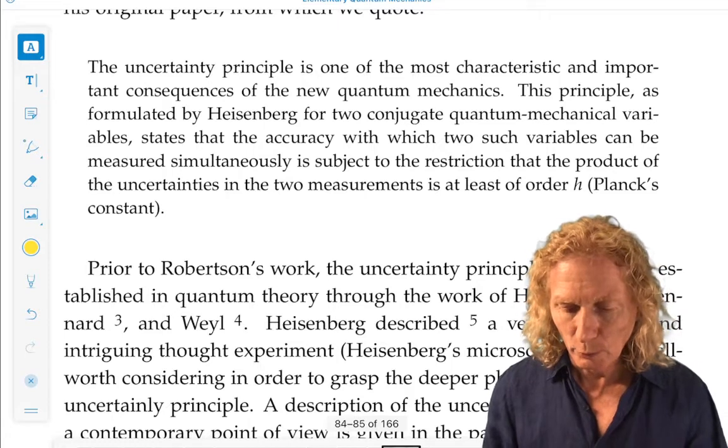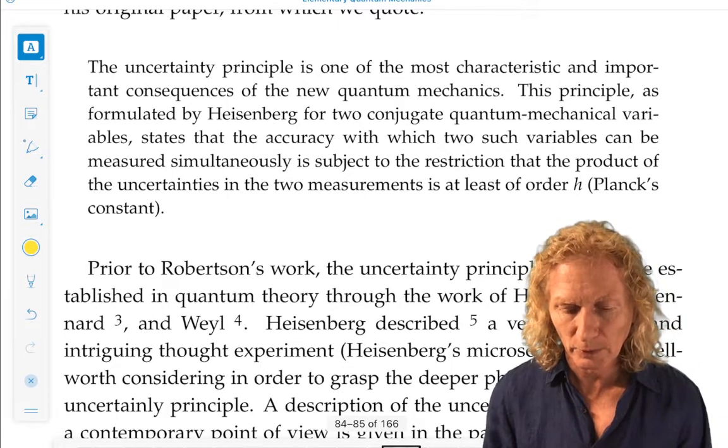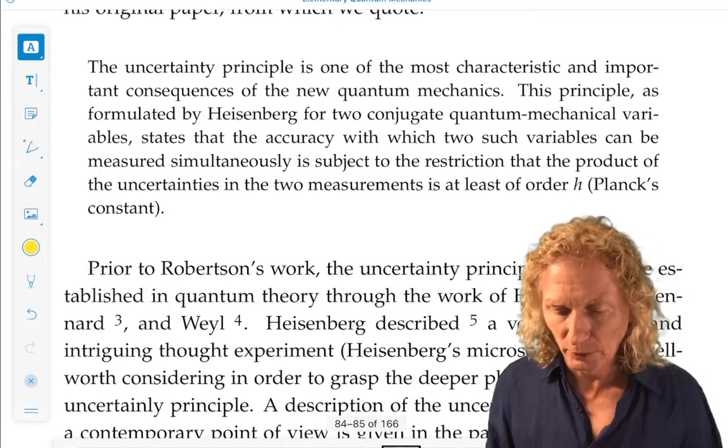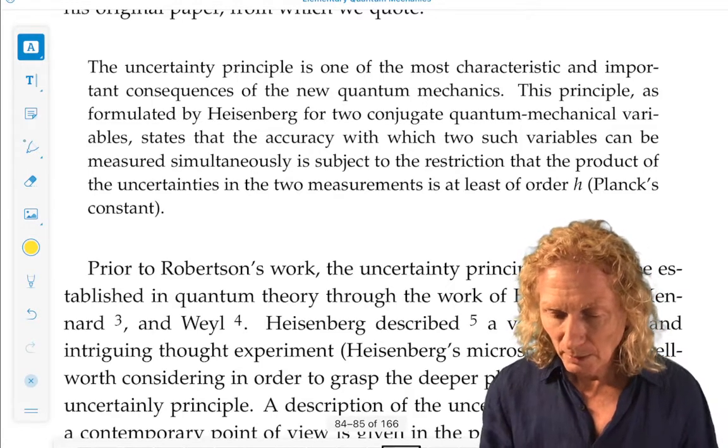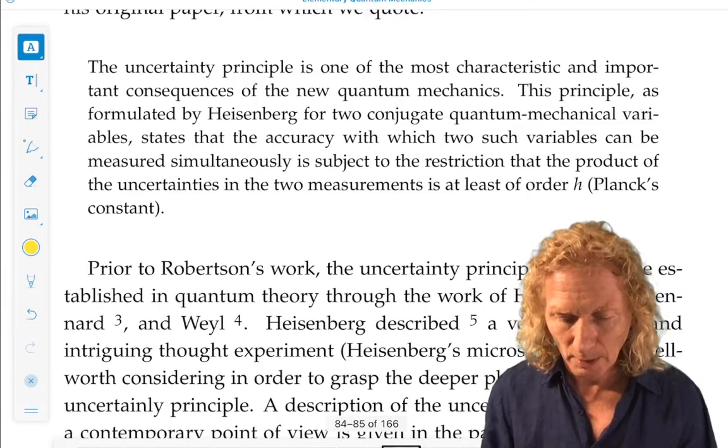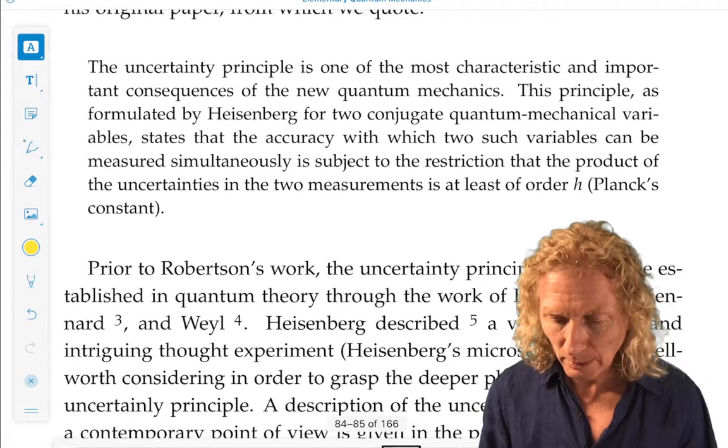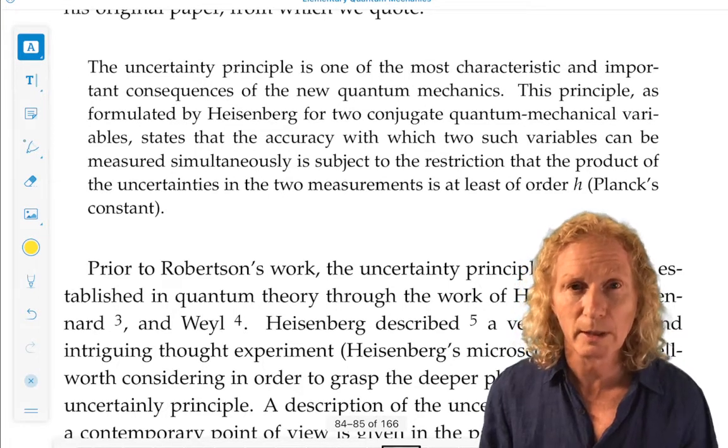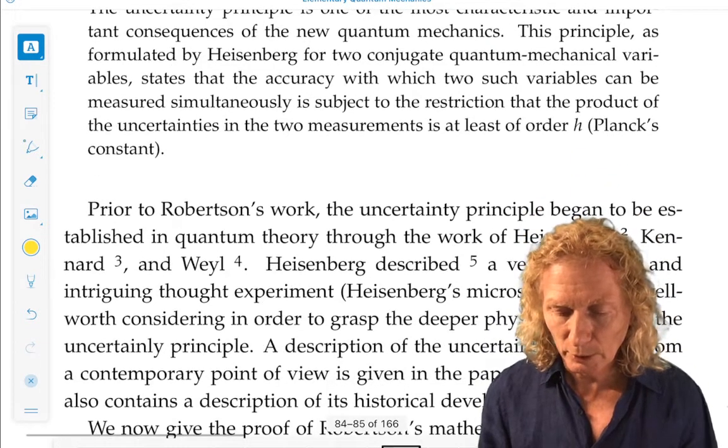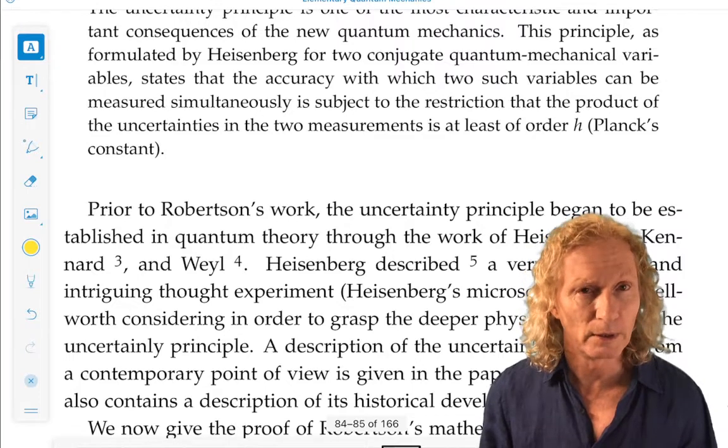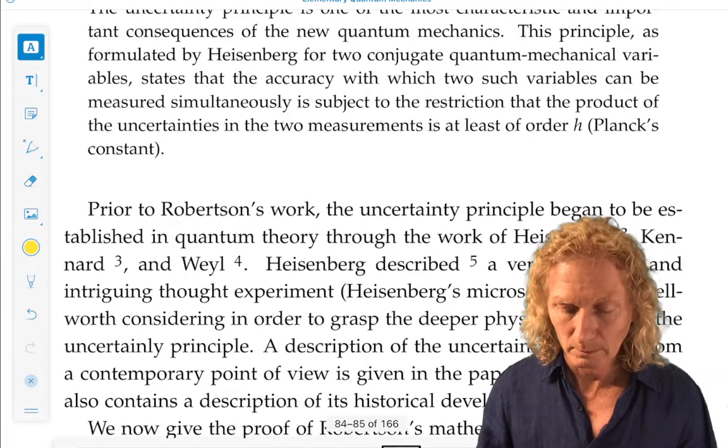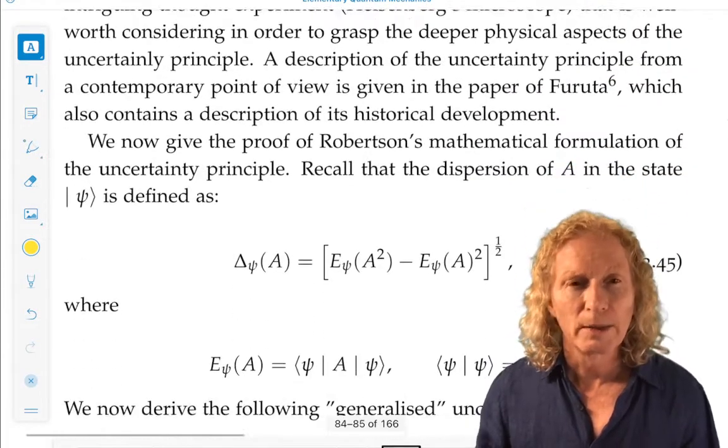So, the uncertainty principle is one of the most characteristic and important consequences of the new quantum mechanics. Robertson did his work in 1929, or published it. So, it was the new quantum mechanics then. This principle, as formulated by Heisenberg, for two conjugate quantum mechanical variables, states that the accuracy with which two such variables can be measured simultaneously, we just looked at simultaneous measurement in the last section, is subject to the restriction that the product of the uncertainties in the two measurements is at least of order h-bar. What could that mean?